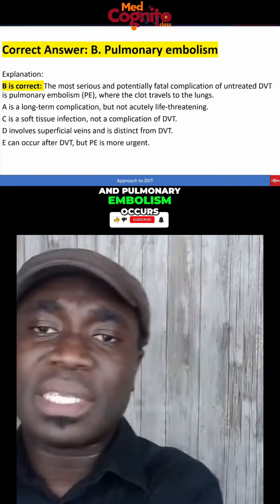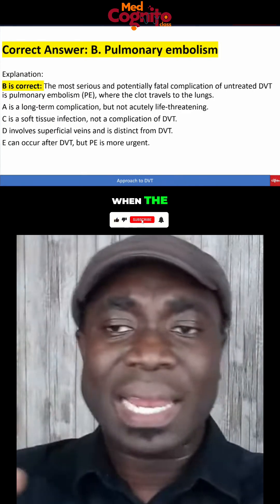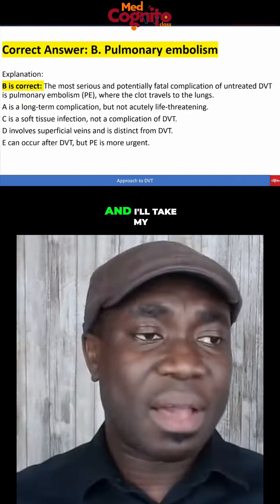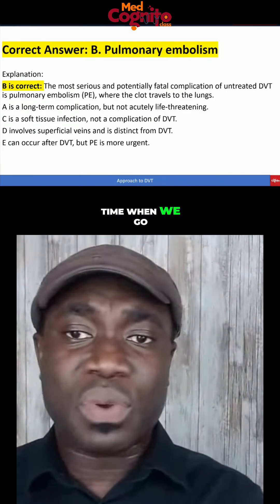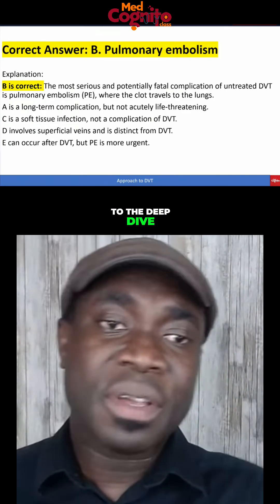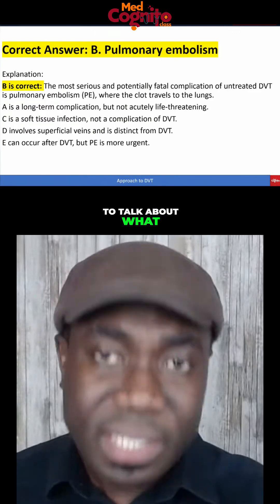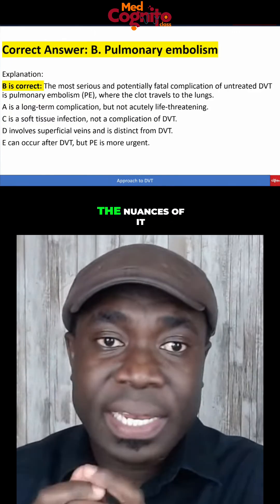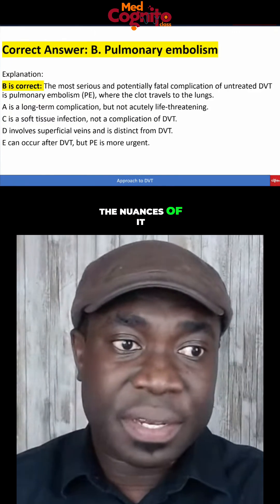Pulmonary embolism occurs when the clot travels from the leg to the lung. I'll take my time when we go to the deep dive to talk about what DVT is and all the nuances of it.